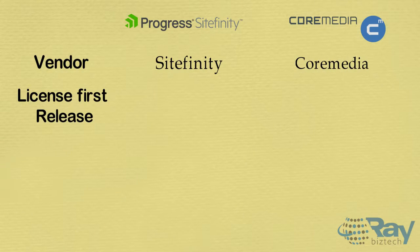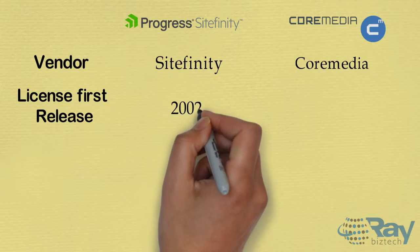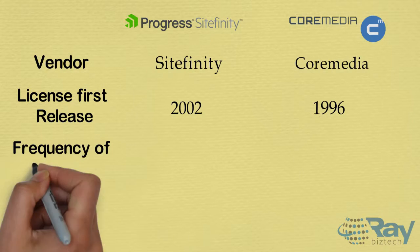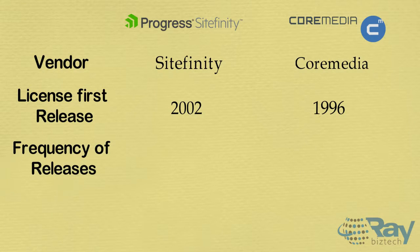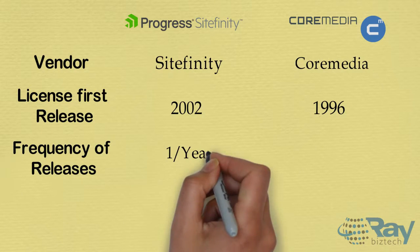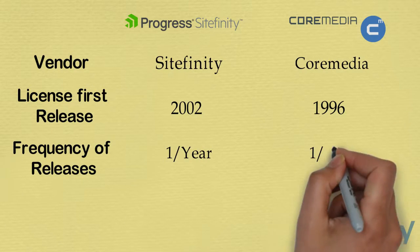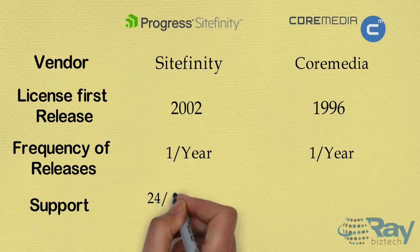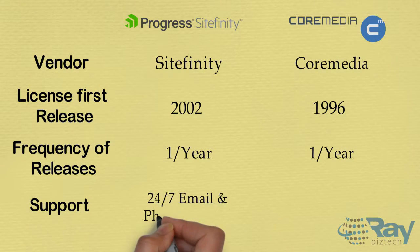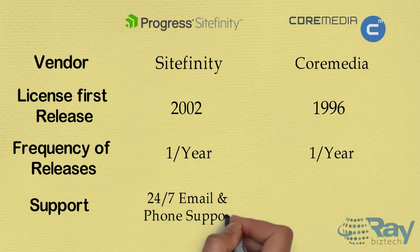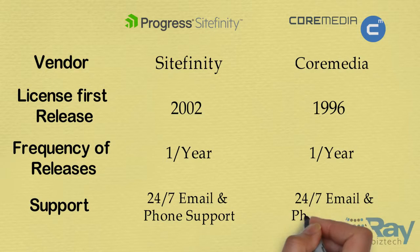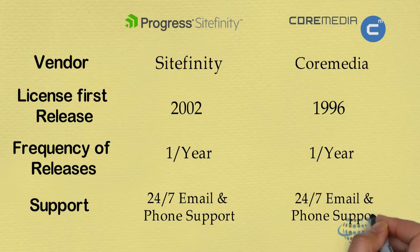License first release: SiteMedia in 2002, CoreMedia in 1996. Frequency of releases: SiteMedia once per year, CoreMedia once per year. Support: 24/7 email and phone support for SiteMedia; CoreMedia also has 24/7 email and phone support.